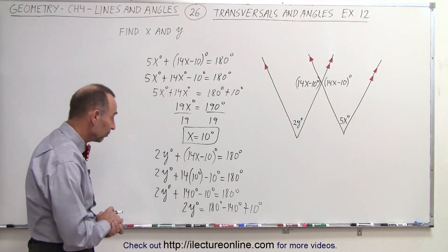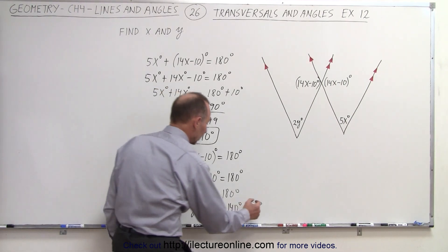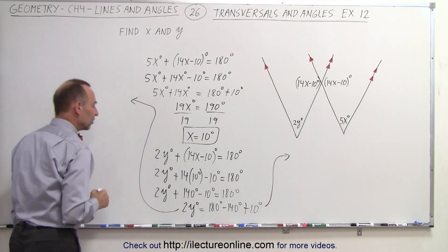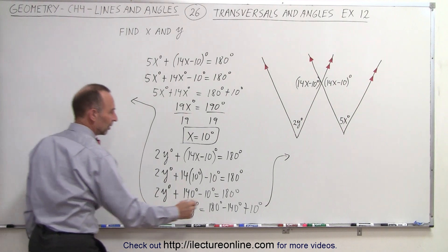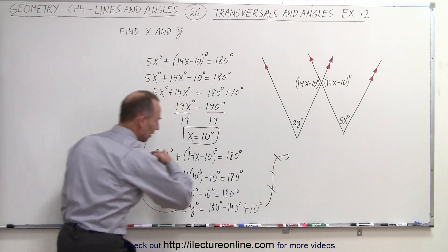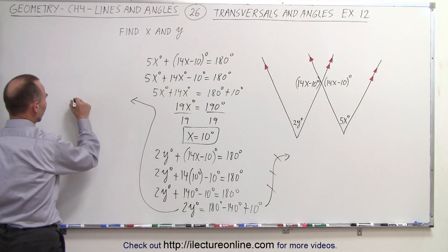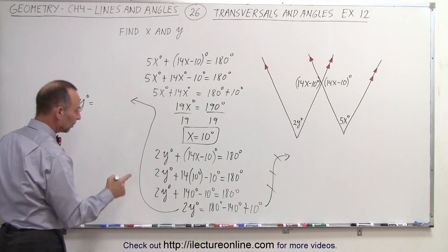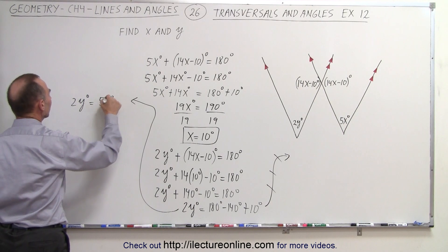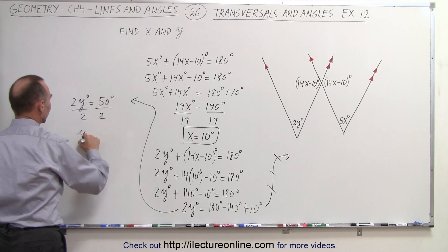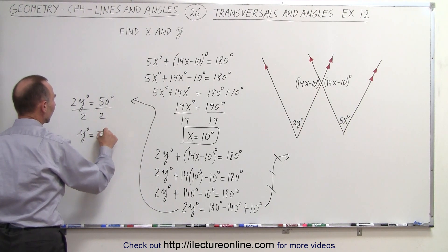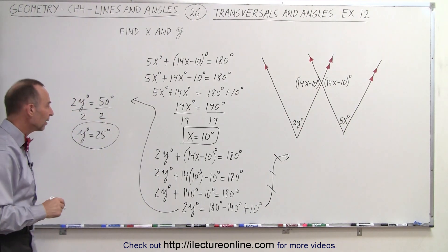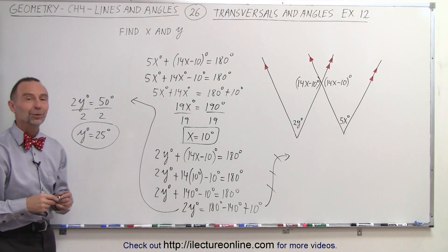So 180 minus 140 is 40, plus 10 is 50. So we can continue over here. Actually, you know what, I'm going to continue over here, so I don't stand in your way, so you can see this. So let's not travel to the right, let's travel to the left. And that means we can write that 2y degrees is equal to 180 minus 140 is 40, plus 10 is 50 degrees. Divide both sides by 2, and we can say that y degrees equals 25 degrees. So x equals 10, y equals 25, and that is how we do that.